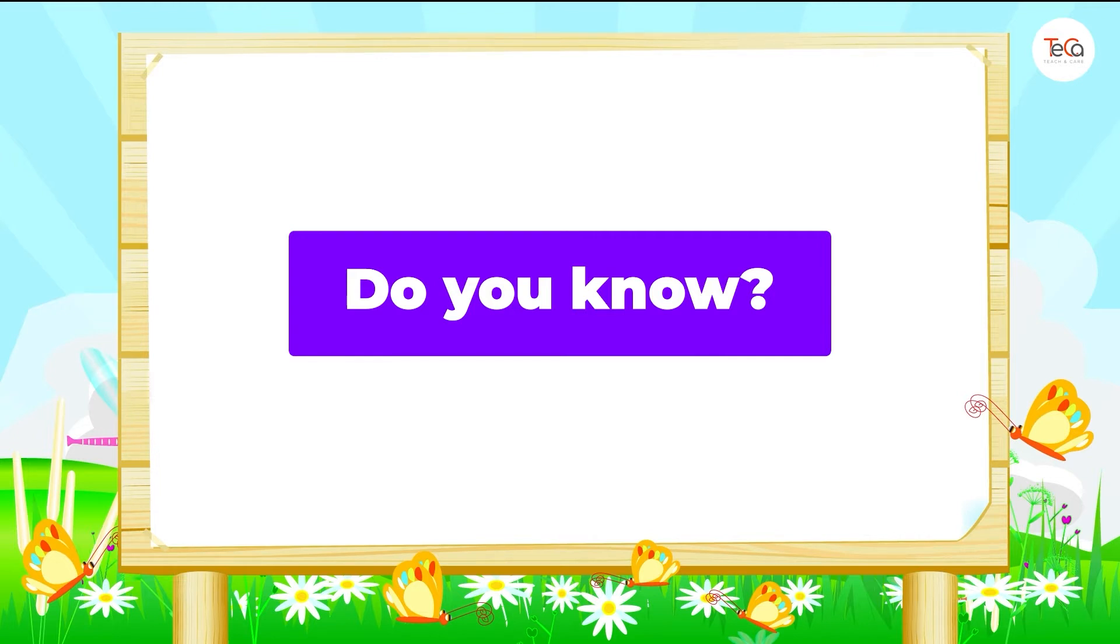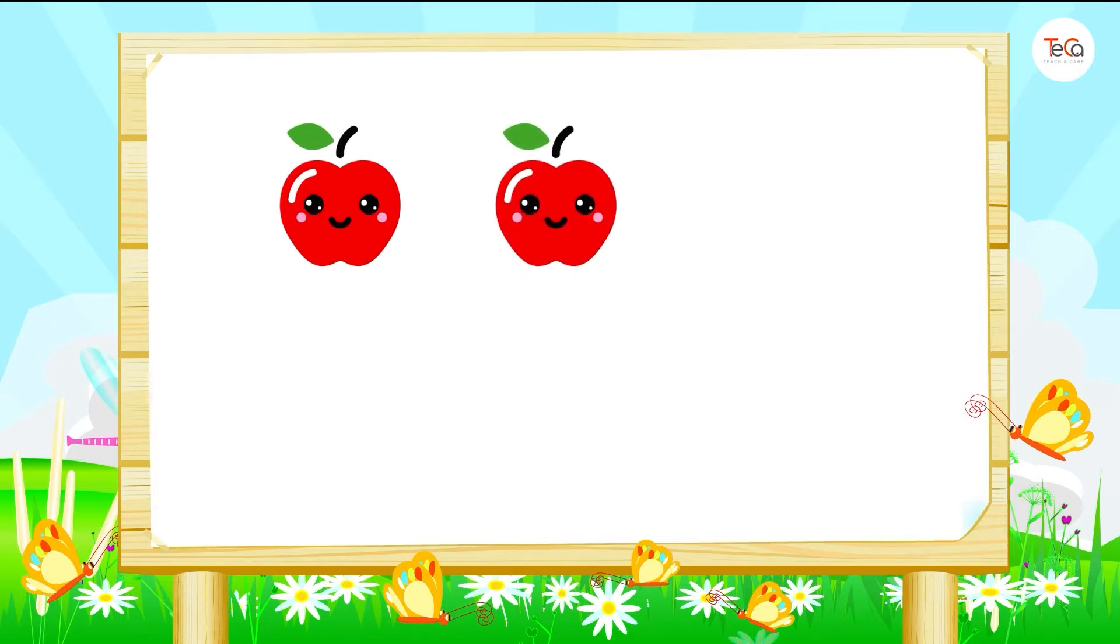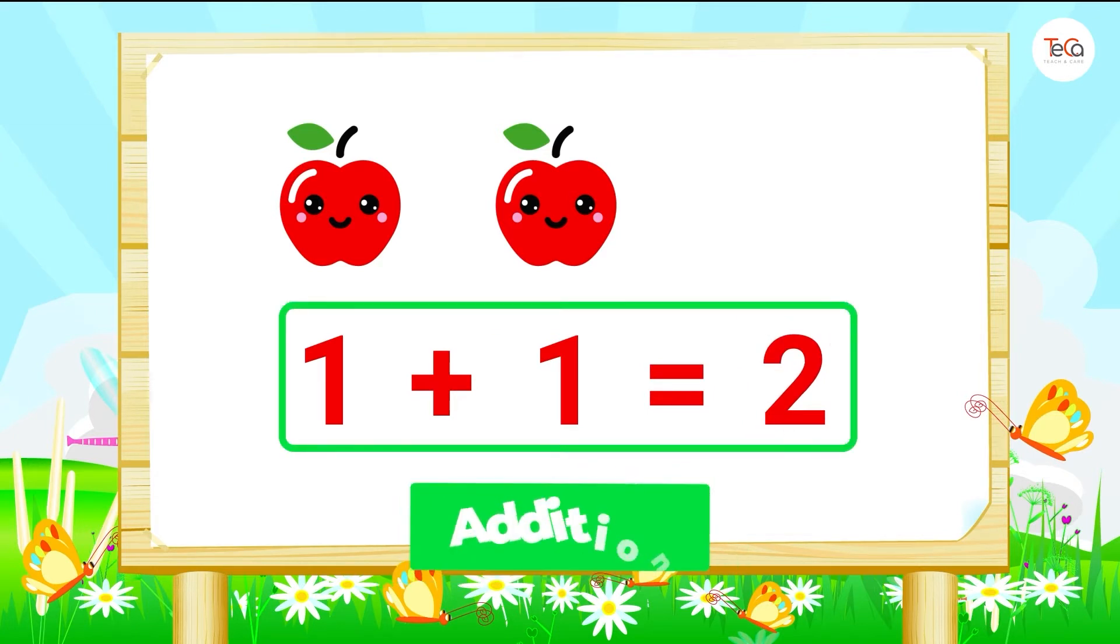For example, you have one apple and your mum gives you another apple. Now you have two apples. Here we add one and one to get two. We say one plus one equals two. We call this addition.